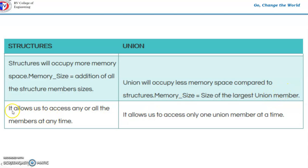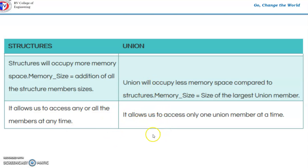Another difference is that a structure allows you to access any or all of its members at any time, whereas a union allows access to only one member at a time. If you initialize all union members, you can observe which value is valid. Also, you can perform operations on structure members, but you cannot perform operations on union members.